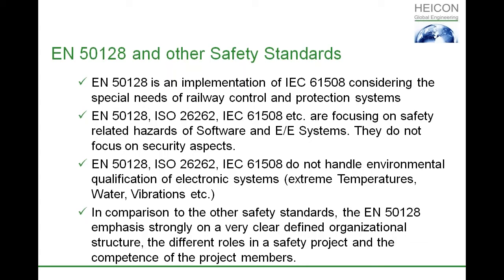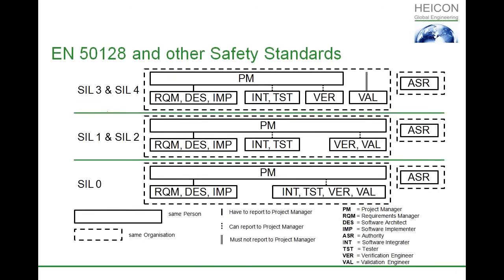Now we come to, from my point of view, a key difference between the standards. In comparison to other standards, the EN 50128 emphasizes strongly on a very clearly defined organizational structure — the different roles in safety projects and the competence of project members. You see the SIL levels on the left-hand side: SIL 3 and SIL 4 are the high levels, with SIL 4 being the most critical systems. For SIL 3 and SIL 4, you need an independent validation engineer outside the project, probably under the umbrella of quality assurance. According to ISO 9000, quality assurance is independent of the project, and the validation engineer must be independent as well.